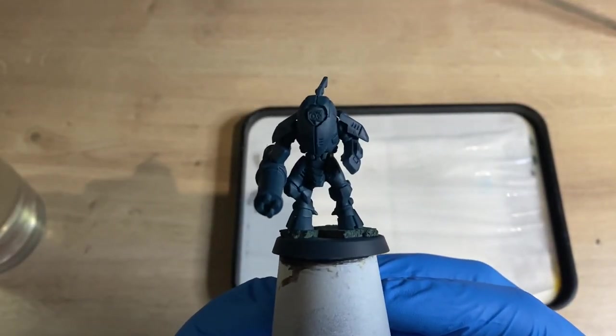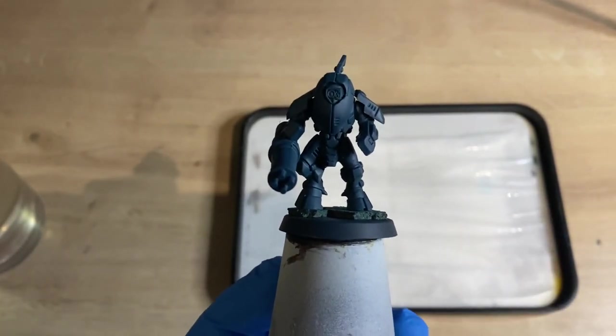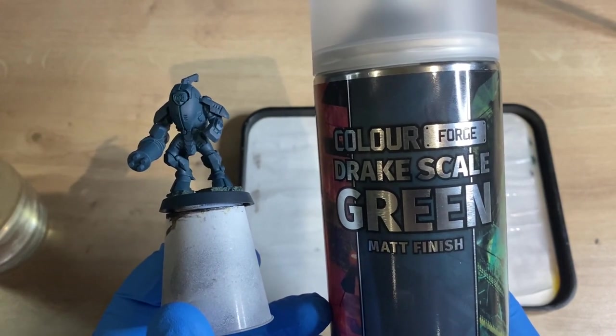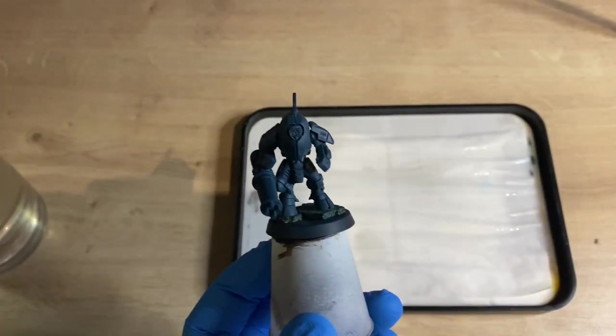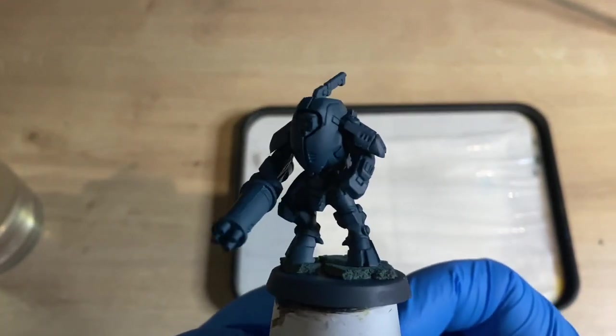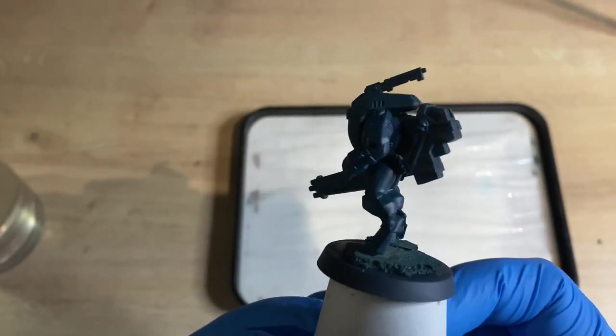So the first thing you're going to want to do with all of your miniatures in this army is give them an undercoat, and I've gone for Darkscale Green by Colorforge. It's like a really deep bluey green—you can see it on the screen now. And that's going to be the color for my Tau sept, so let's get cracking.